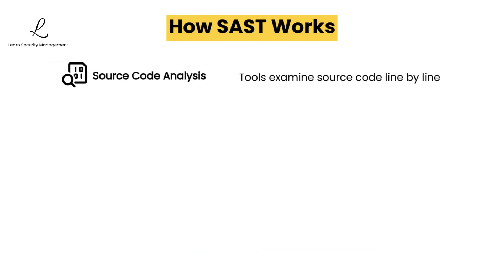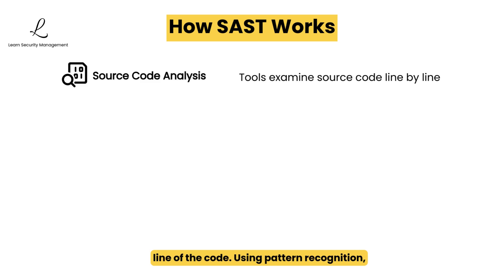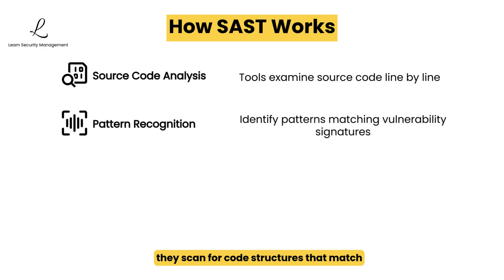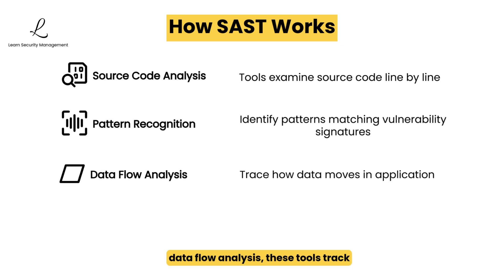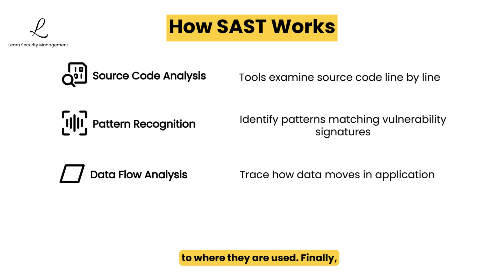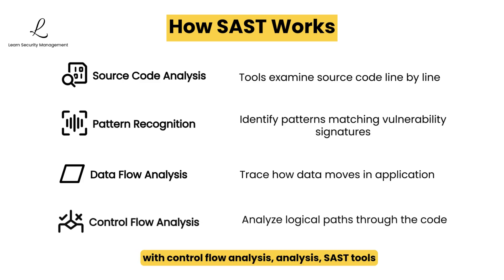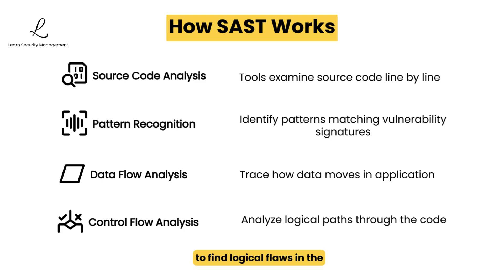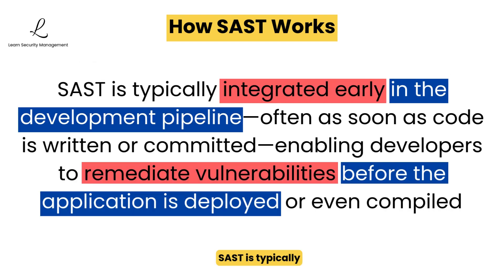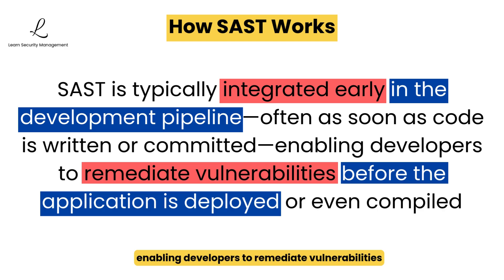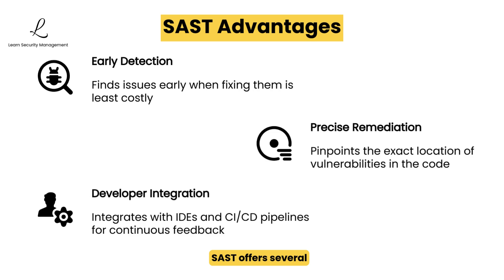When performing source code analysis, SAST tools methodically examine each line of code. Using pattern recognition, they scan for code structures that match known vulnerability signatures in their databases. Through data flow analysis, these tools track how information moves through the application, following inputs from entry points to where they are used. Finally, with control flow analysis, SAST tools map out all possible execution paths to find logical flaws in the code's decision-making structure. SAST is typically integrated early in the development pipeline, often as soon as code is written or committed, enabling developers to remediate vulnerabilities before the application is deployed or even compiled.